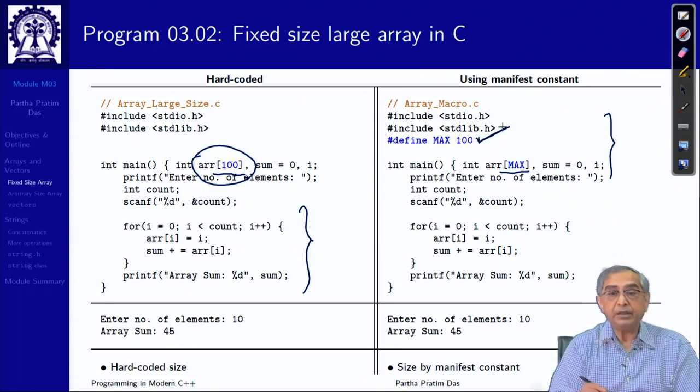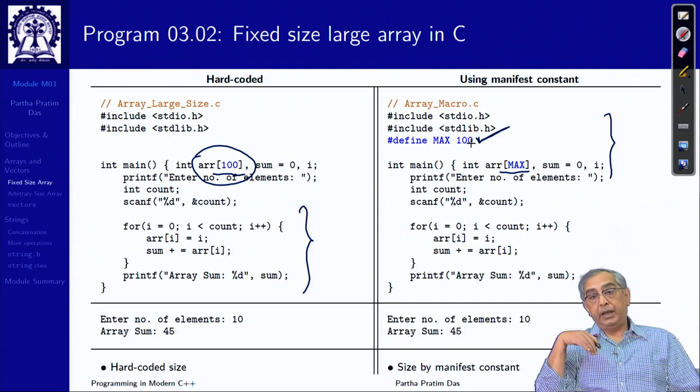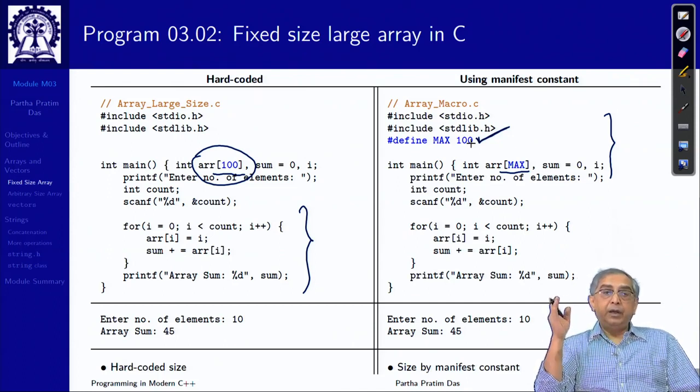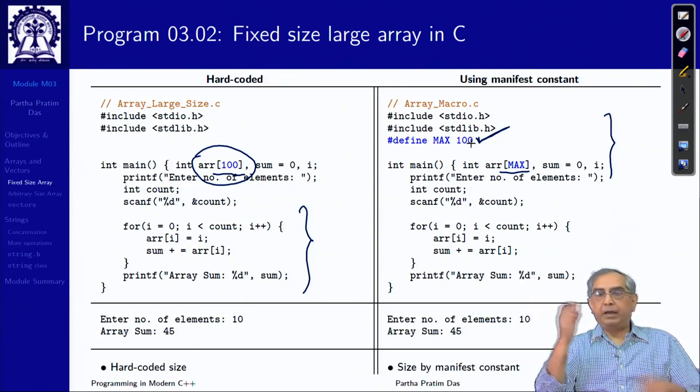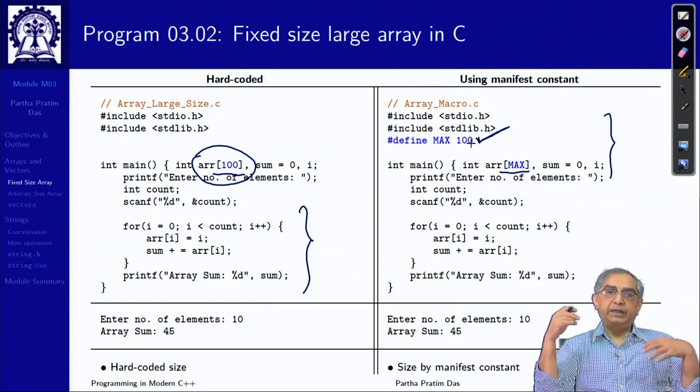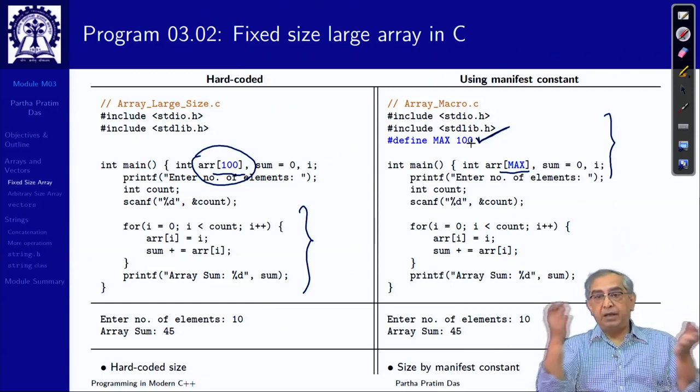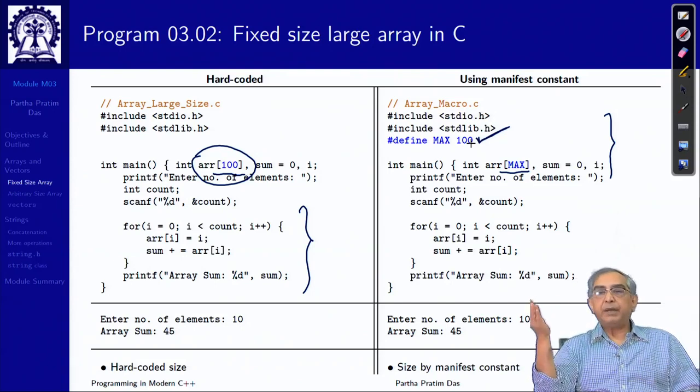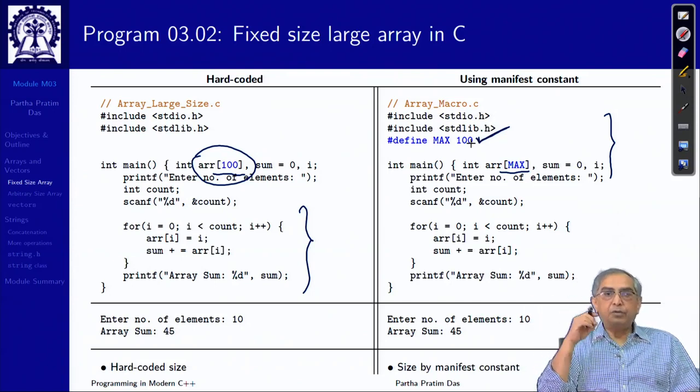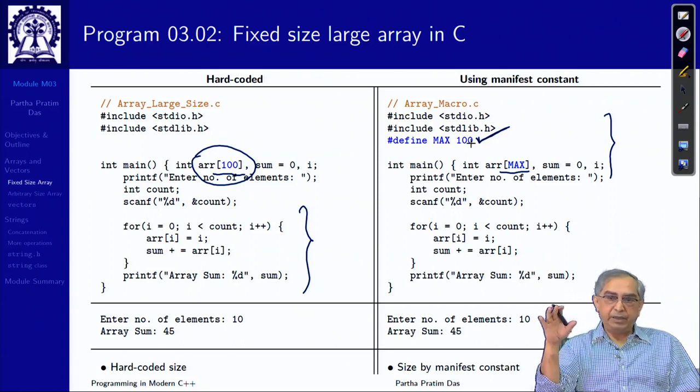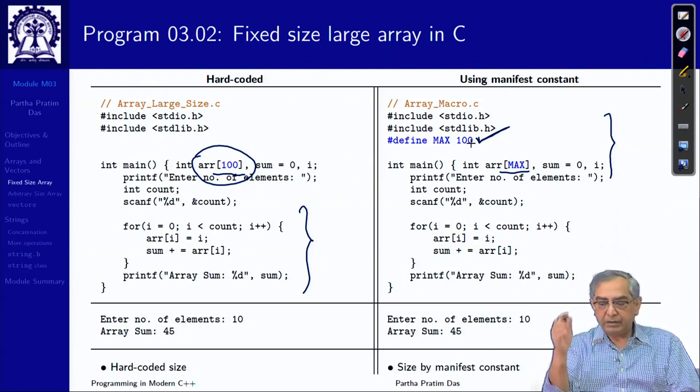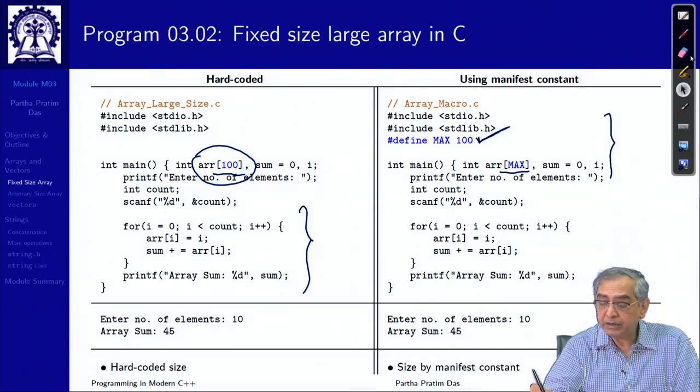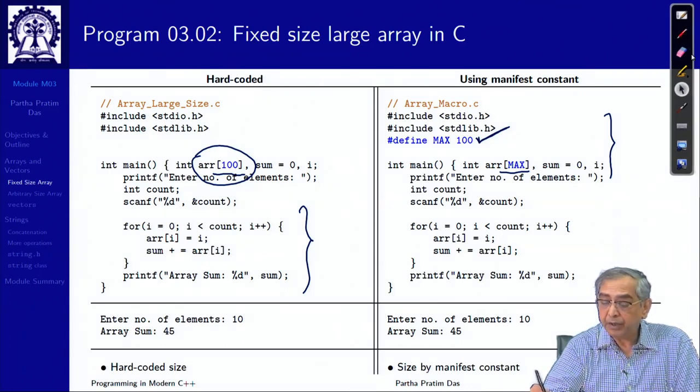Whereas, if we do a manifest constant, I can just simply change it here. And it also gives another advantage that often maybe a number of different arrays may have their size related. If I hard code, I have to do the changes in three places. But if I put the manifest constant and use that, the change is only at one place.